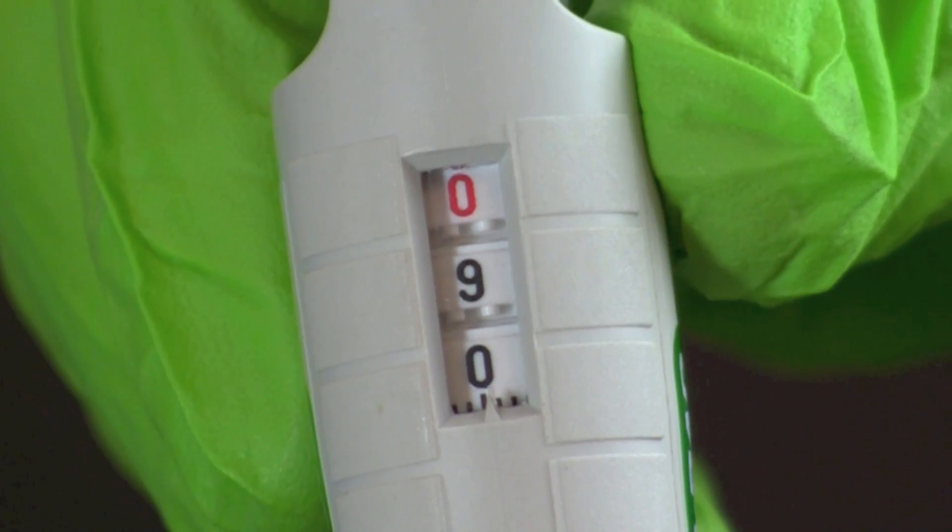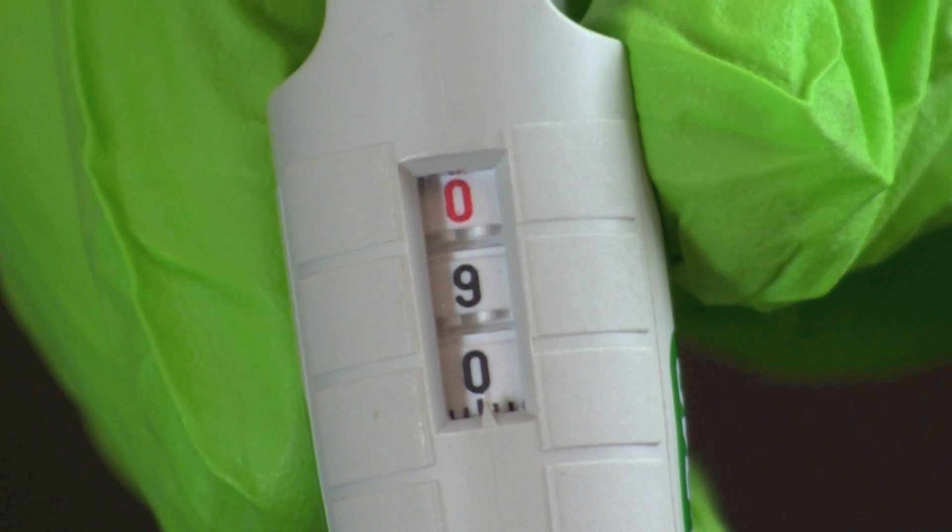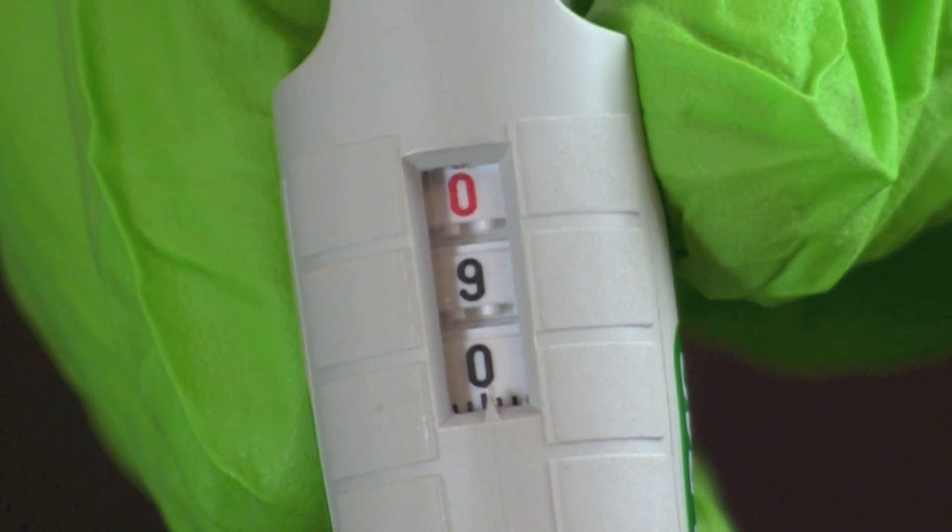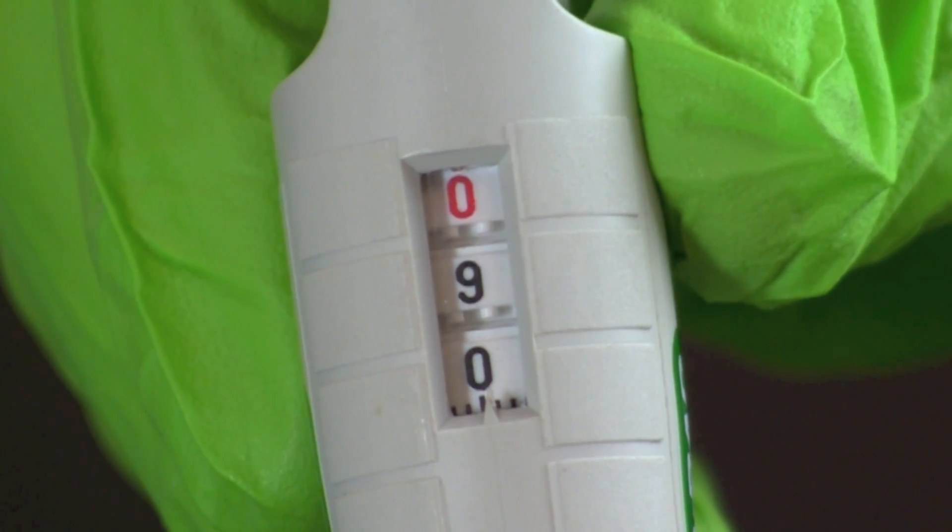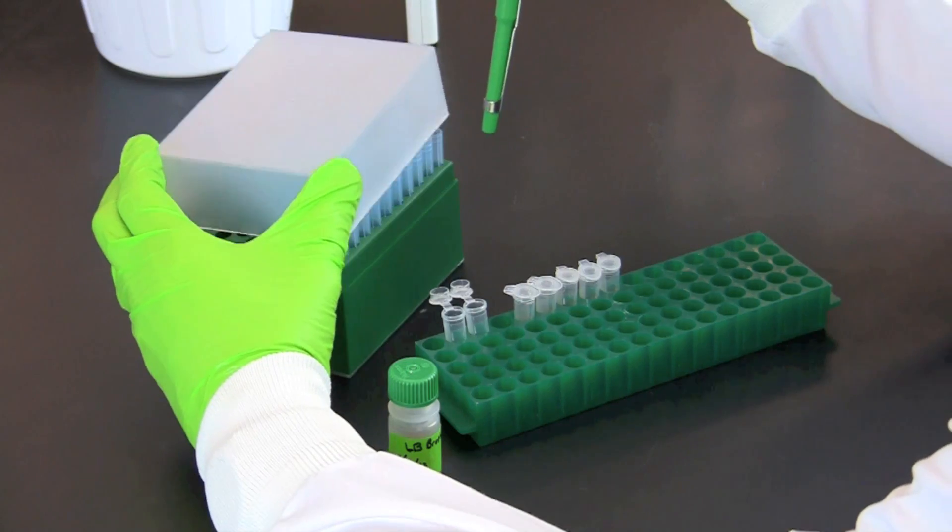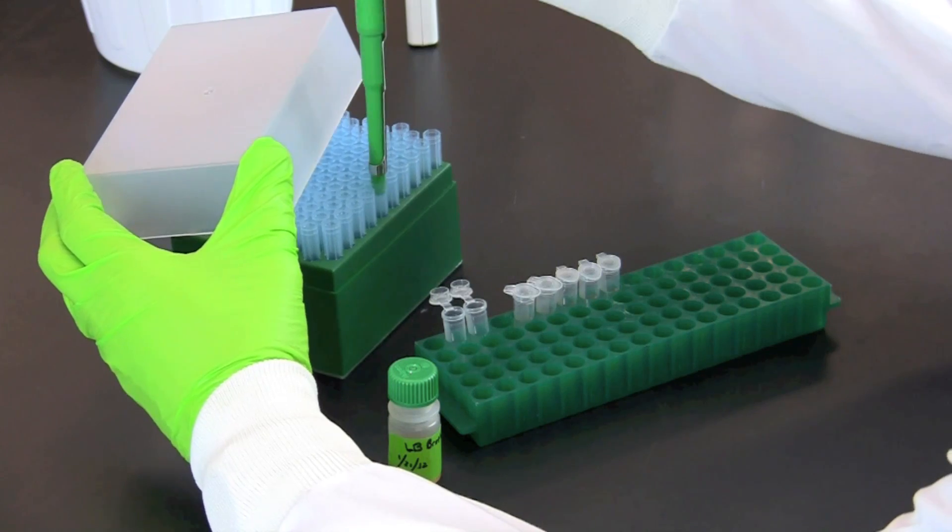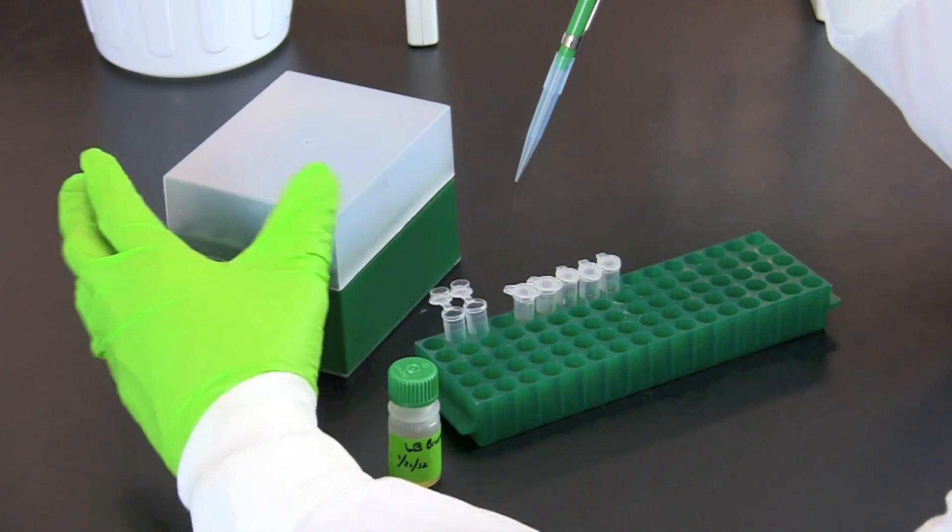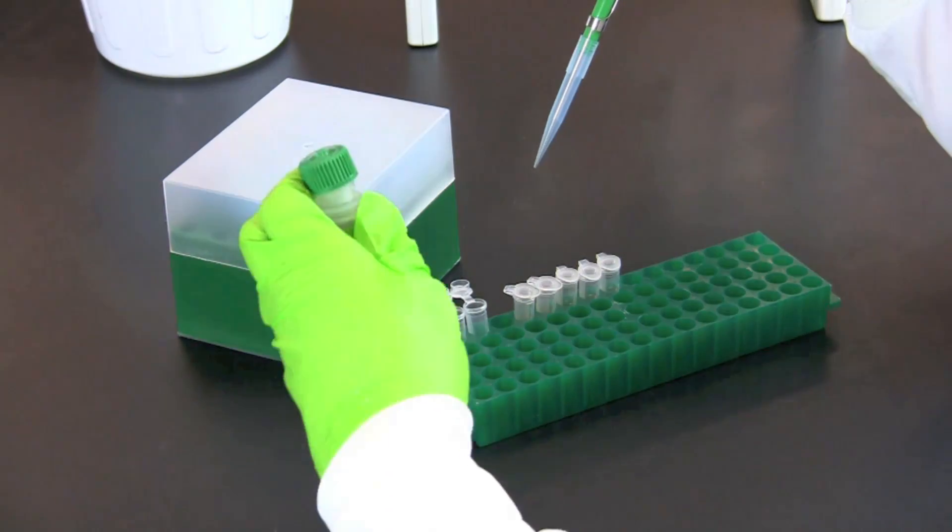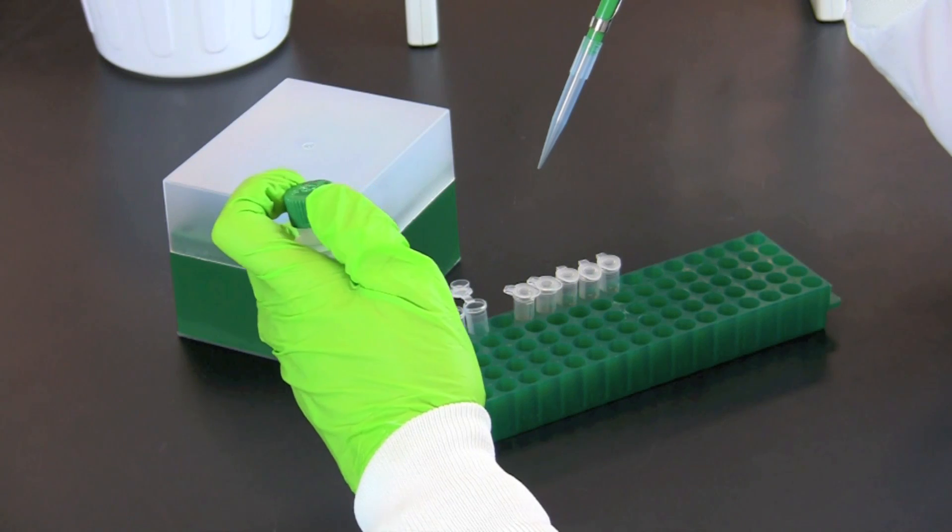Using a 100 to 1000 microliter micropipette, set the volume to 900 microliters. Using aseptic technique, pipette 900 microliters of LB broth into each microcentrifuge tube.